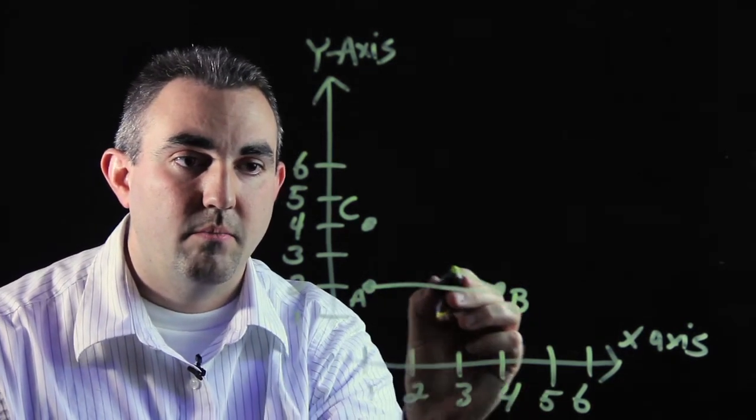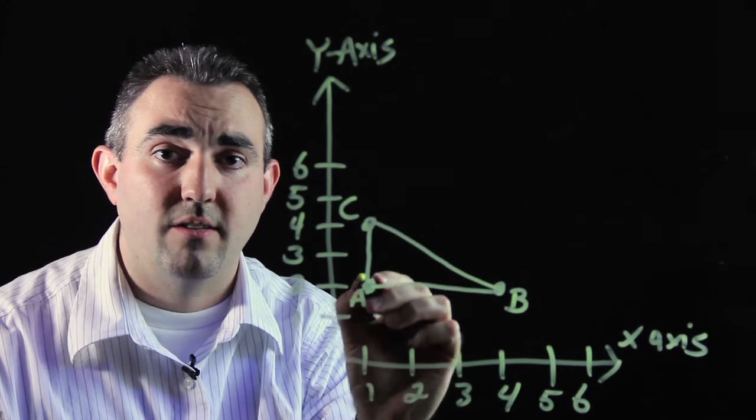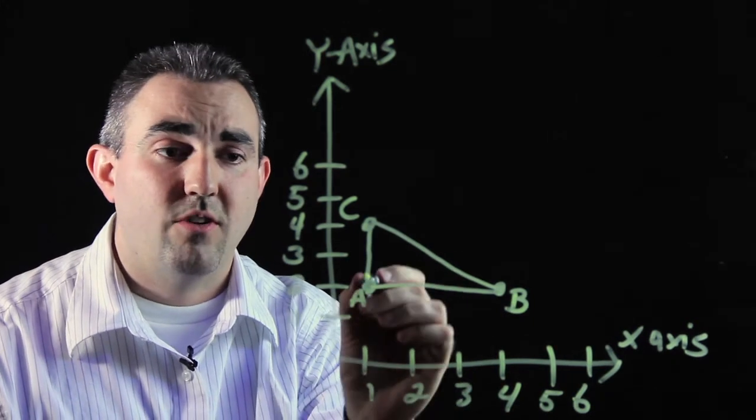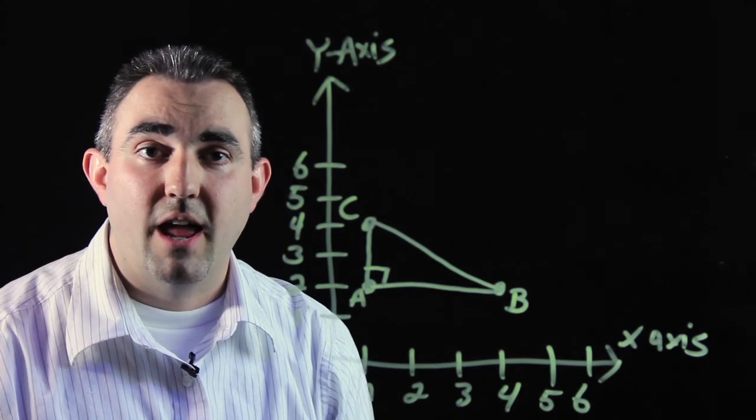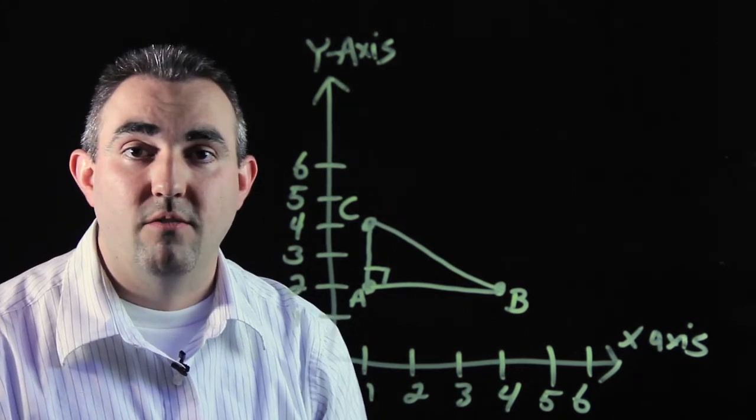A to B, B to C, and C back down to A. Right here we have a triangle. It's a right triangle. It has a right angle in it. And we have created a picture in quadrant one of our coordinate plane.